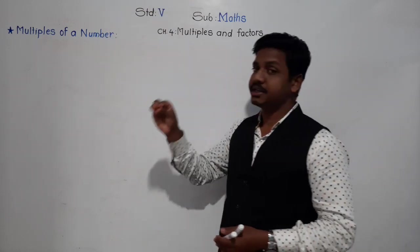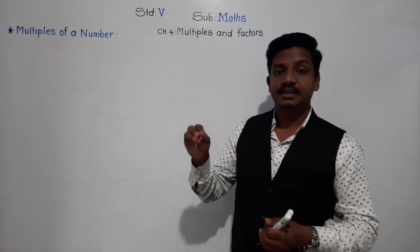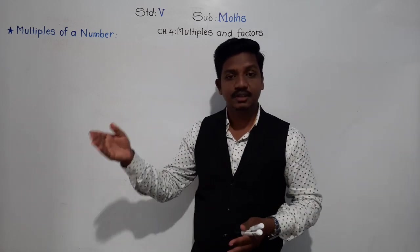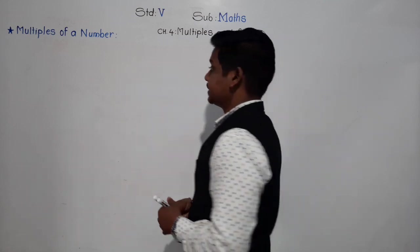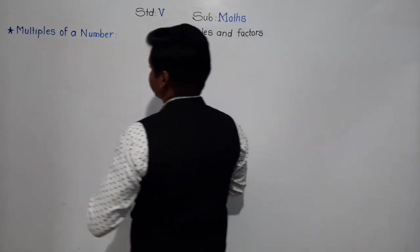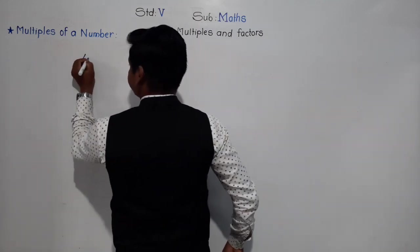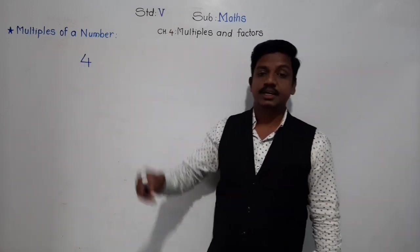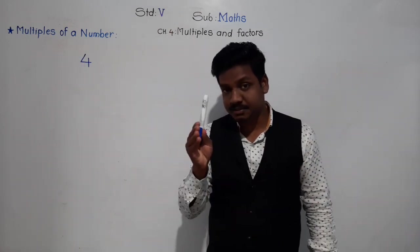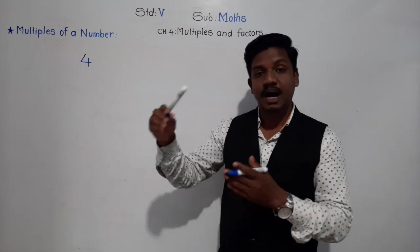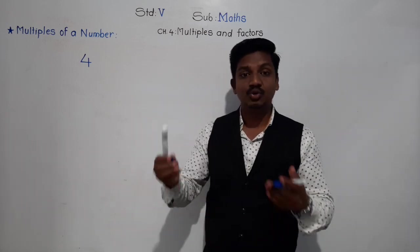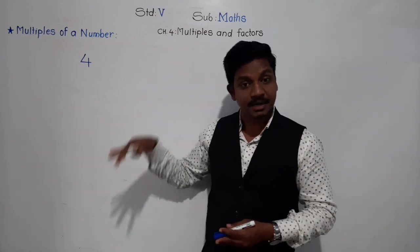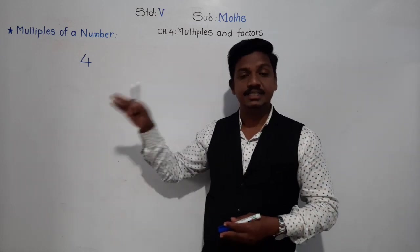You will be given any number and the question will be: find the multiples of the given number. For example, suppose the number given is 4. We have to find the multiples of 4. First we will understand what multiples mean, and after that we will learn how to find them. Once we understand the meaning, it is easy to find.